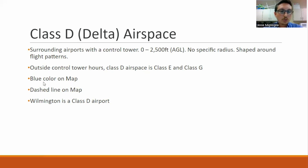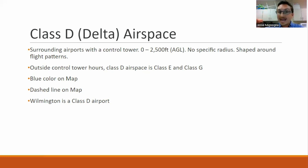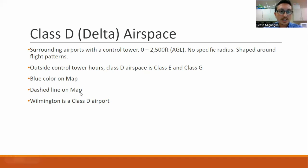Deltas are blue dashed lines on the map. So the color-code pattern goes: Bravo is solid blue, Charlie is solid magenta, Delta is dashed blue, Echo is dashed magenta. Make flashcards — write all this stuff down. Wilmington, North Carolina, where I live, is a class Delta airport.